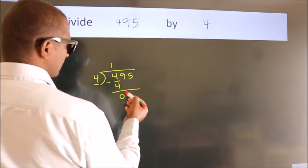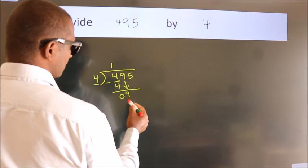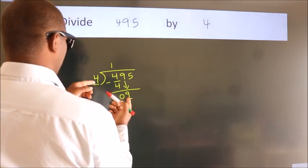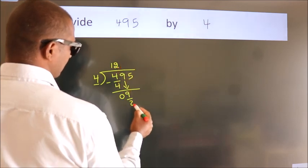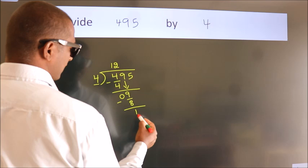After this, bring down the beside number. So 9 down. A number close to 9 in 4 table is 4 twos, 8. Now we subtract. We get 1.